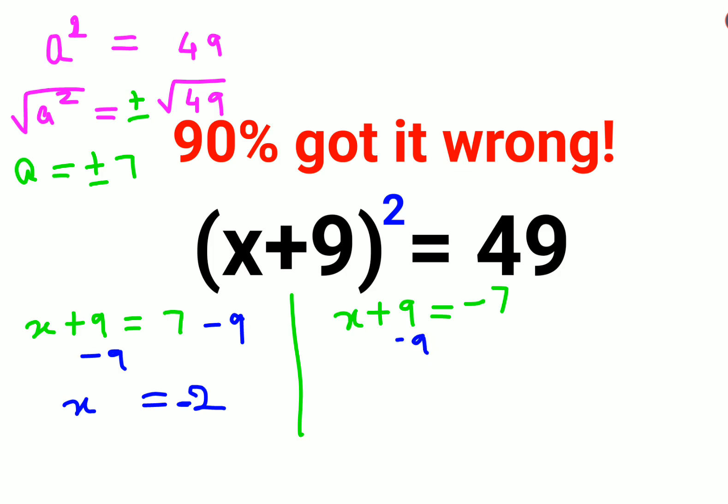Here again we will subtract 9 from both sides. So I am left with x equals minus 7 minus 9. When you have two negatives, the operation is addition. When you add 7 and 9 you get 16. The sign carried will be minus, so we have minus 16.